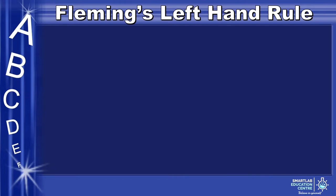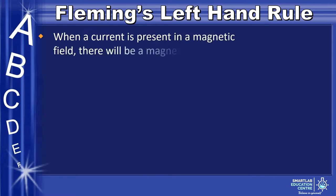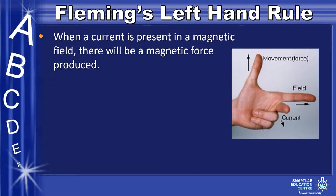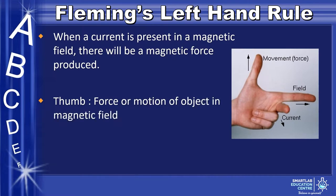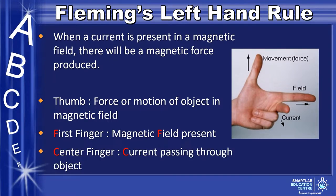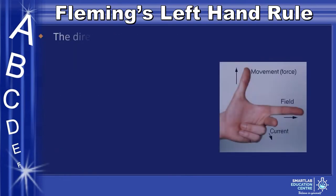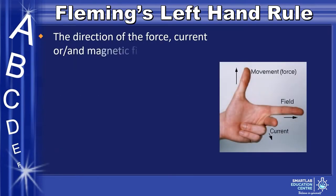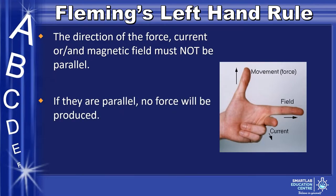Now, let us observe Fleming's left-hand rule. When a current is placed in a magnetic field, a magnetic force will be produced. We use our left hand to identify the force exerted on the current. The thumb represents the force or motion of the object, the first finger represents the magnetic field, and the center finger represents the current flowing. To use the left-hand rule, we must take note that the direction of the force, current, and magnetic field are not parallel. If the current and magnetic field are parallel, no force will be produced on the object.